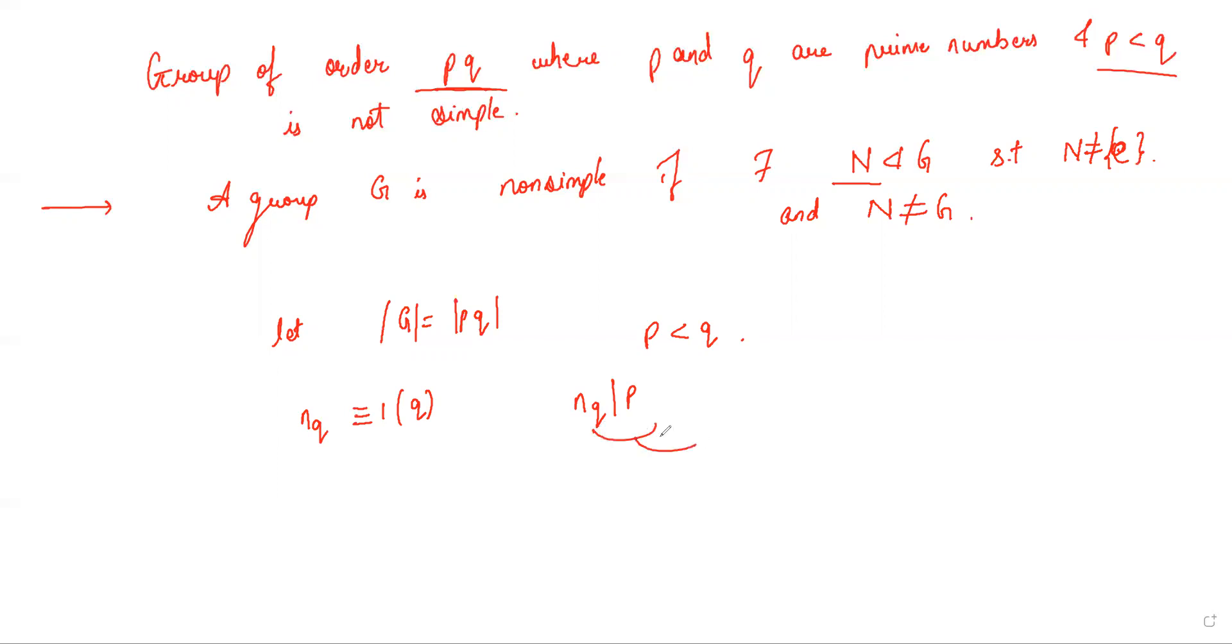Now, this particular thing implies nq can be 1 or p, and this implies nq is 1 or q plus 1, and so on. Now, combining these two, this implies, along with the fact that p is less than q, that nq has to be equal to 1.